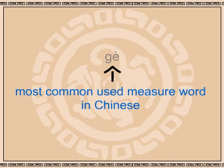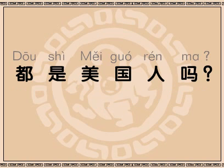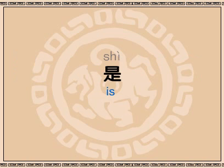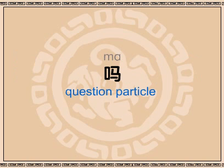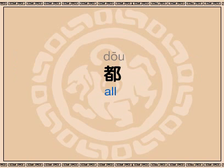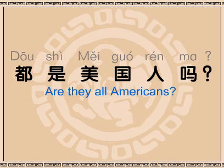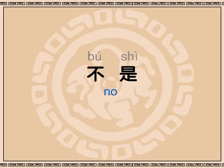All right. So next, the girl asks 都是美国人吗? Recognize any words here? Almost all of them, actually. 是 means is. 美国人 means American. And 吗 is a question particle. Very good. The new word is 都, which means all. So 都是美国人吗? means are they all American? Easy enough. So then the girl answers 不是, that means no, right? Yep.